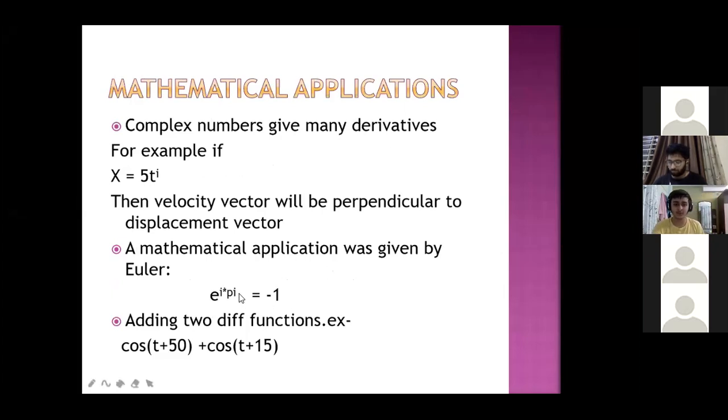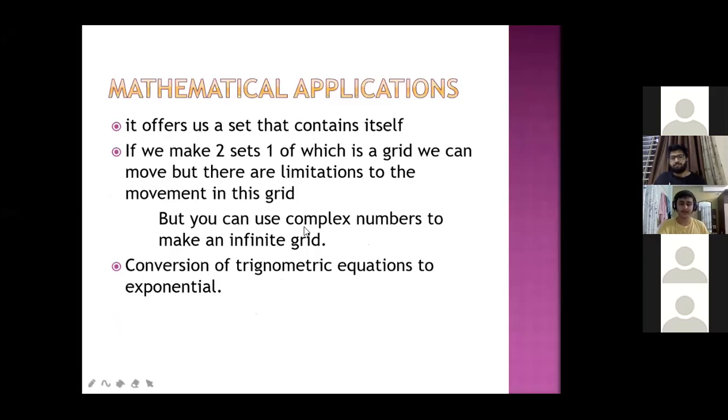The most interesting application of complex numbers: e to the power iota pi equals minus 1. The question arises, that e is positive, how is the power negative? So we can see the derivation. And there are two different functions, cos theta plus i sin theta. So we can add them and use complex numbers.